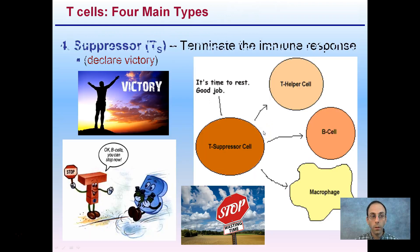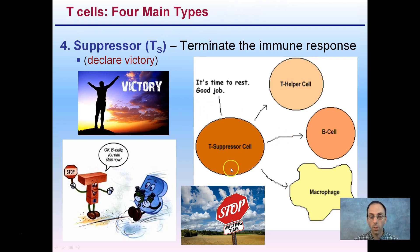The fourth type are the suppressor T-cells, which terminate the immune response. This might initially sound counterintuitive — why do we want suppressor T-cells? They're the ones that basically declare victory and say it's time to rest, stop devoting energy to this. We've cleared up the problem, you can stop now.